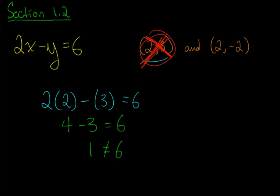What about (2, -2)? Well, we plug in, like we did before, and we do 2 times 2 minus negative 2 equals 6.